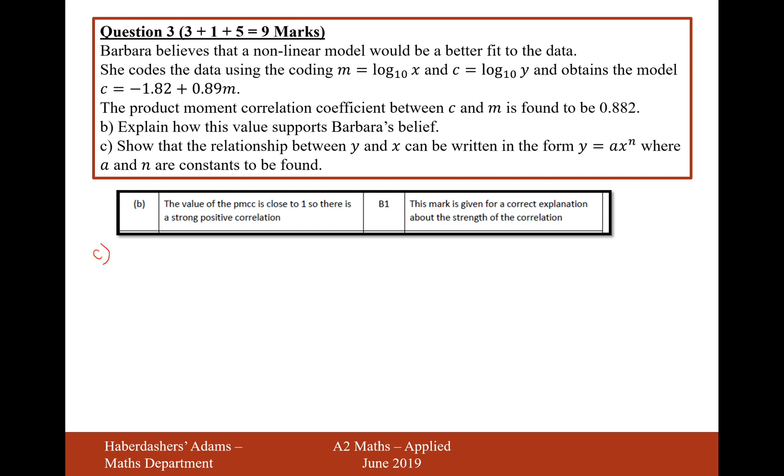Moving on to part C now. Show that the relationship between X and Y can be written in the form Y equals AX to the power of N, where A and N are constants to be found. I need my calculator for this part. So let's start off by writing it as C equals minus 1.82 plus 0.89M, and let's replace M with log 10 of X and C with log 10 of Y. So it's going to be log base 10 of Y equals minus 1.82 plus 0.89 log base 10 of X.